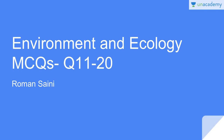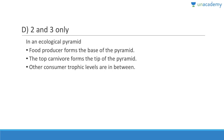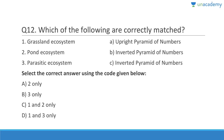Let us discuss questions 11 to 20. Question 11: Which statement about ecological pyramids is correct? Food producers form the tip of the pyramid — that is wrong; food producers form the base. The top carnivore forms the tip — that is correct. Other consumer trophic levels are in between — also correct. Answer is D, 2 and 3. In an ecological pyramid, food producers form the base, top carnivores form the tip, and other consumer trophic levels are in between.